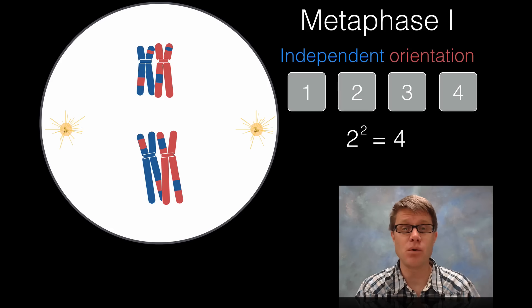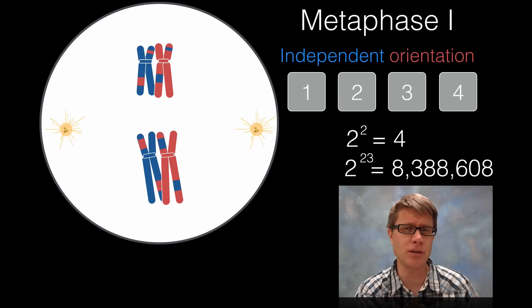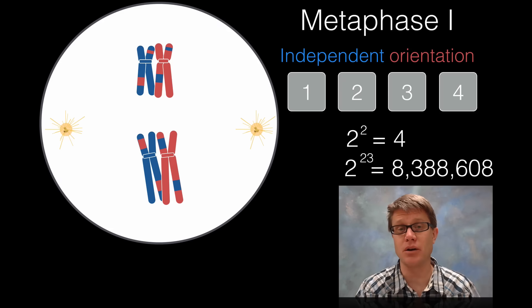So how many are there? We would say four. What if I had three here? Then there would be eight ways that they could arrange themselves. Still doesn't seem like much variation, but remember in humans we have 23 chromosomes. So there are over 8 million ways that all those chromosomes could independently orient themselves during metaphase 1. That and crossing over is giving us a huge amount of variation in meiosis. Remember that one sperm has to find that one egg, so it's really over 64 trillion possibilities of an offspring just based on independent orientation itself.